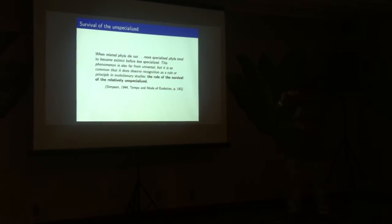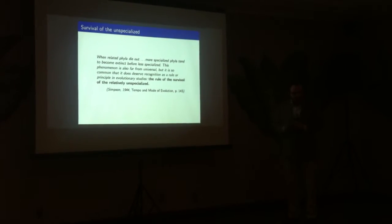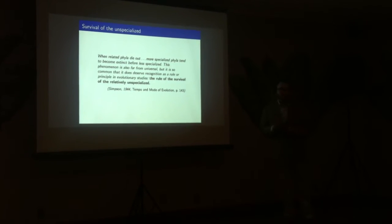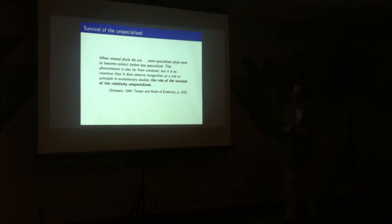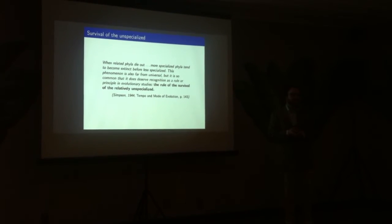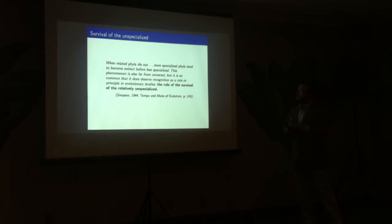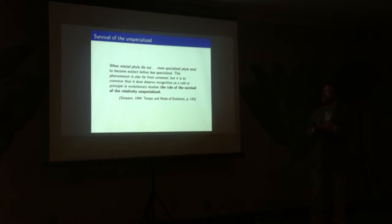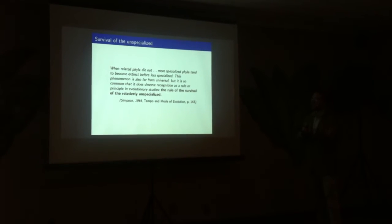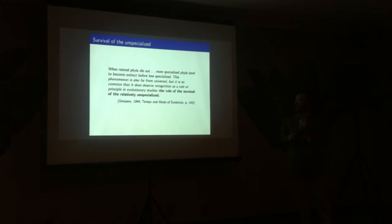For other traits in terms of extinction, it's a little lost in terms of developing major hypotheses. There's so many different traits we can look at. And really what we end up going back to, of all things, is Simpson in the 1940s with his statement here. When related phyla die out, more specialized phyla tend to become extinct before less specialized. This phenomenon is also far from universal, but it is so common that it does use a recognition as a rule or principle in evolutionary studies.